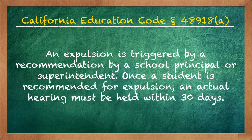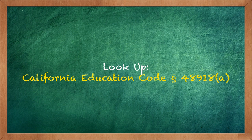The last option for discipline is expulsion, which is when a student is removed from school for up to a year. An expulsion is triggered by a recommendation by a school principal or superintendent. Once a student is recommended for expulsion, an actual hearing must be held within 30 days. Expulsion usually involves either zero tolerance offenses, such as bringing a firearm to school, or limited discretion offenses, such as possession of drugs. The entire list of offenses can be found by looking up the site that appears on your screen.